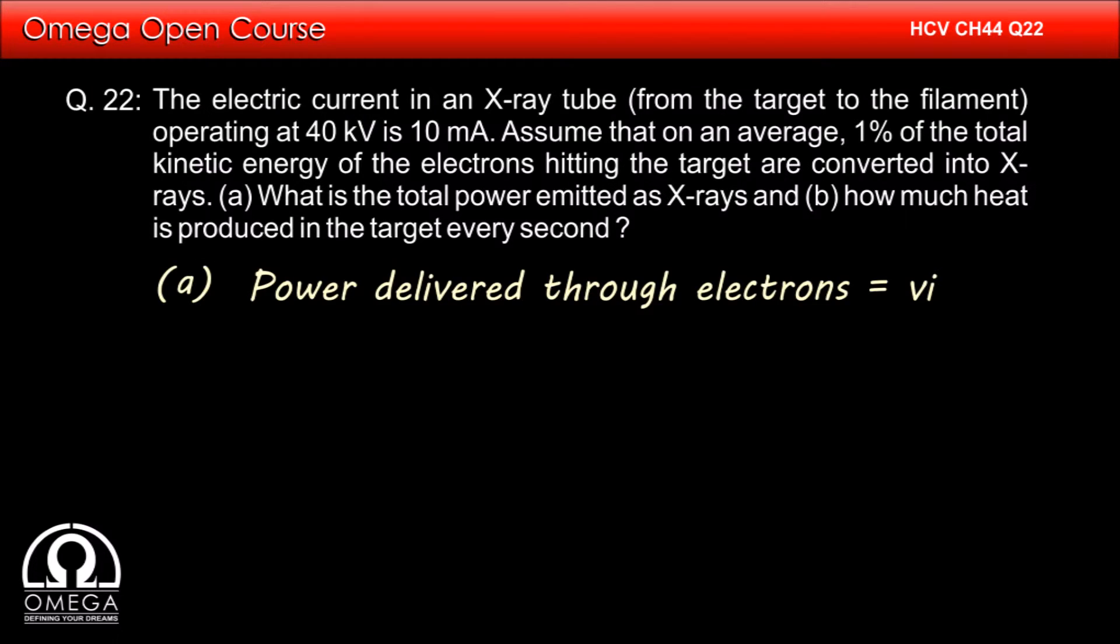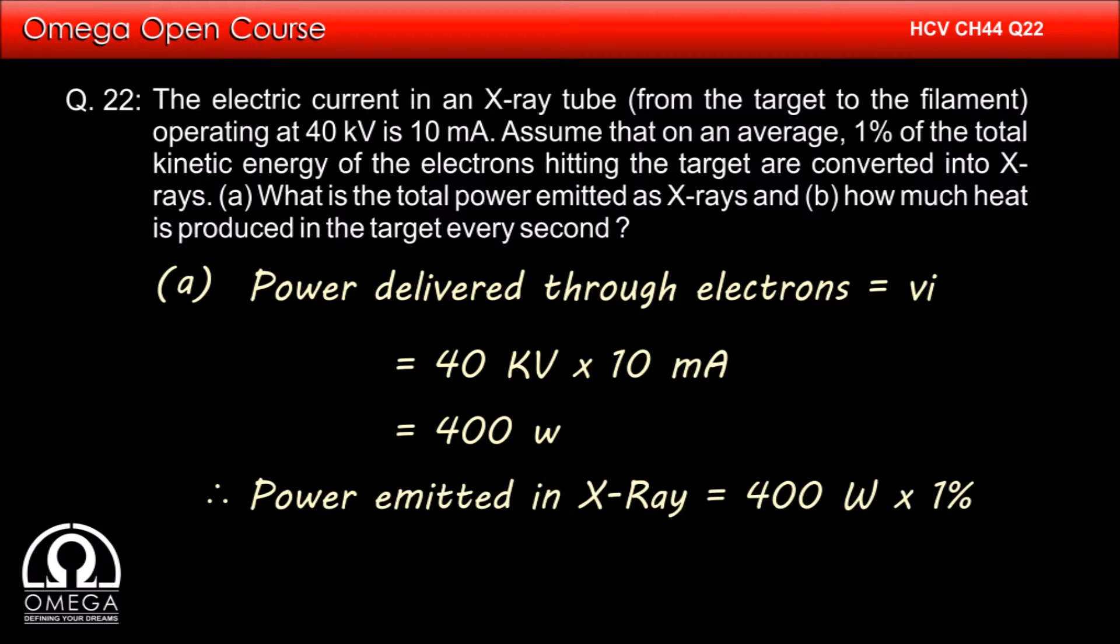Power delivered through electrons is equal to V × I, which equals 40 kV × 10 mA, which is 400 W. Power emitted in X-rays equals 400 W × 1%, which equals 4 W. This is our answer.